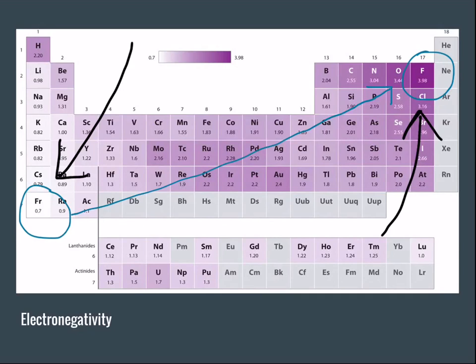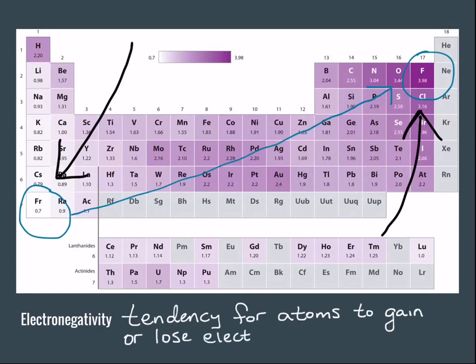So the stuff on the left side of the periodic table tends to be more positive because they're very poor at gaining electrons. Let's define electronegativity just for fun. Electronegativity is the tendency for atoms to gain or lose electrons. Some are good at gaining electrons. Some are good at losing electrons.